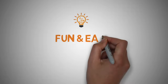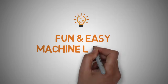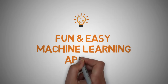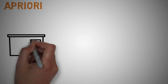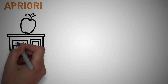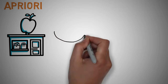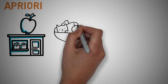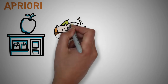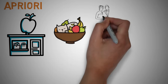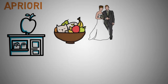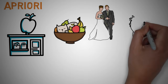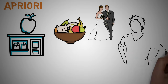Welcome to another fun and easy machine learning tutorial on Apriori. When you go grocery shopping, we often have a standard list of things to buy. Each shopper has a distinctive list depending on one's needs and preferences. A housewife might buy healthy ingredients for a family dinner while a bachelor might buy beer and chips.